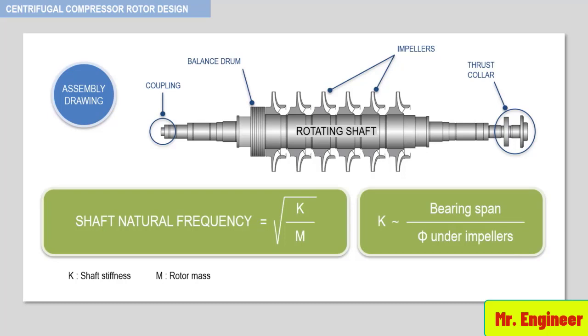Here, the bearing span is the distance between bearing centers. Now, an interesting rule of thumb is that dynamic compressor rotors with stable vibration characteristics usually have a K value higher than 10.